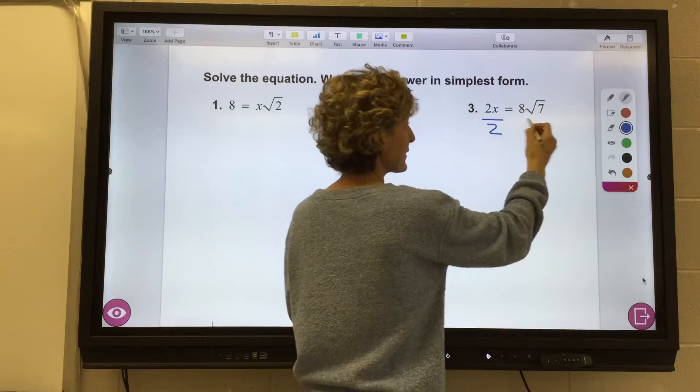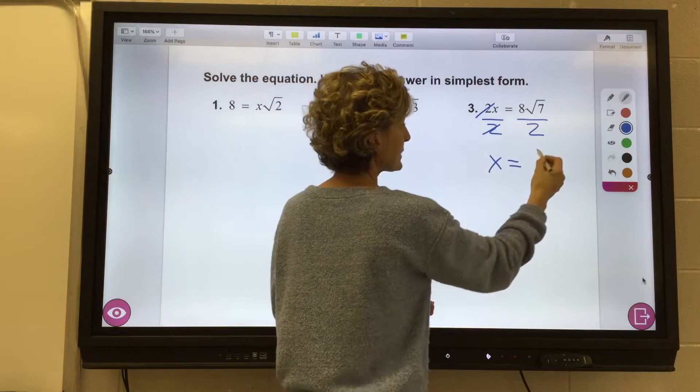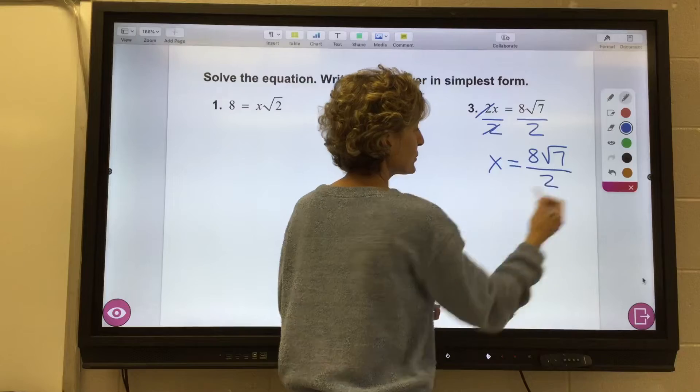Whatever I do on this side, I have to do on this side. All right, that cancels, and x equals 8 square root of 7 over 2.